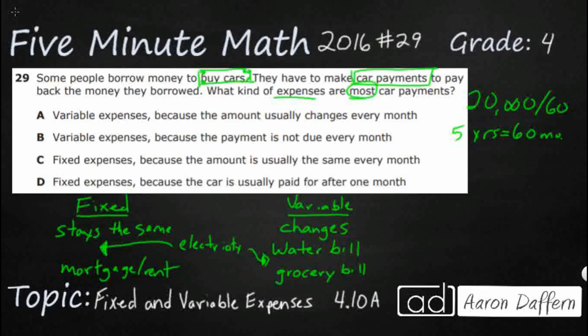So answer A says variable expense because the amount usually changes — but variable expenses do change every month, and if we divide our total by 60 it's going to be the same every single month. Answer B says variable expense because the amount is not due every month — no, it is due every month, so that doesn't work. It looks like we're going with C: fixed expense, because the amount is usually the same every month. If I take my total and divide it by 60 or 72 months, that payment doesn't change. And D says fixed expense because the car is paid off after one month — nope. Our answer is C.